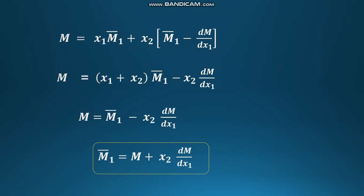Eliminating M2-bar using equations A and D, M becomes equal to x1 M1-bar plus x2 times (M1-bar minus dM/dx1). Simplifying, M equals (x1 plus x2) M1-bar minus x2 dM/dx1. Since x1 plus x2 equals 1, M becomes M1-bar minus x2 dM/dx1. Therefore, M1-bar equals M plus x2 dM/dx1.